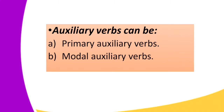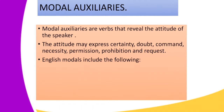When we talk about auxiliary verbs or helping verbs, we can have primary auxiliary verbs or modal auxiliary verbs. Primary auxiliary verbs include 'is,' 'be,' and 'have.' Modal auxiliaries are verbs that reveal the attitude of the speaker towards whatever he or she is talking about. The attitude may express certainty, doubt, command, necessity, permission, prohibition, and request.